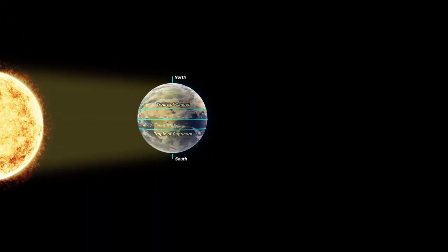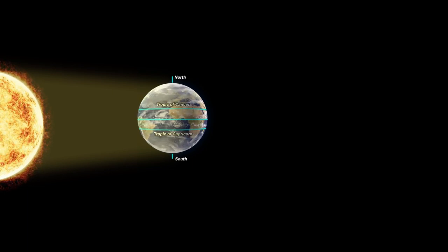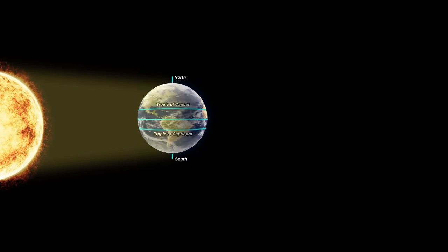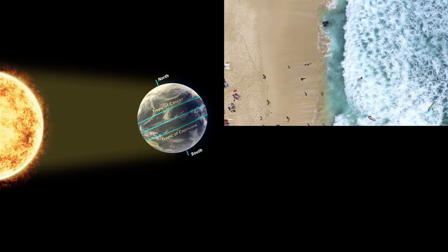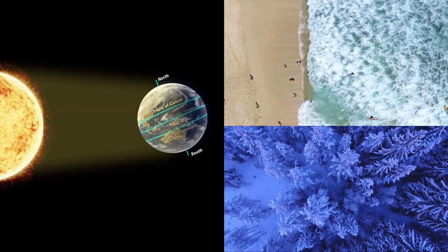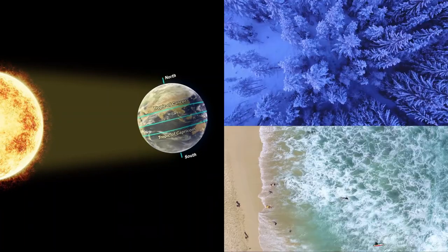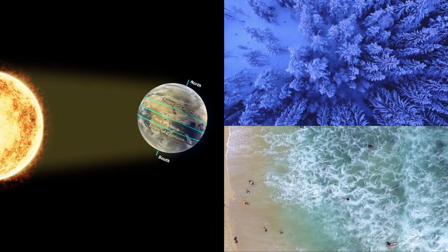This movement of Earth between its tropics is one of the reasons why we have different seasons throughout the year. When the Tropic of Cancer is in front of the sun, we have summers in Northern Hemisphere and winters in Southern Hemisphere, and vice versa when Tropic of Capricorn is in front of the sun.